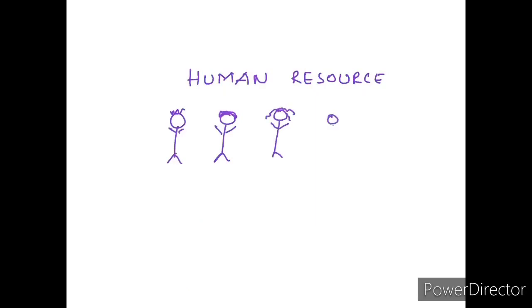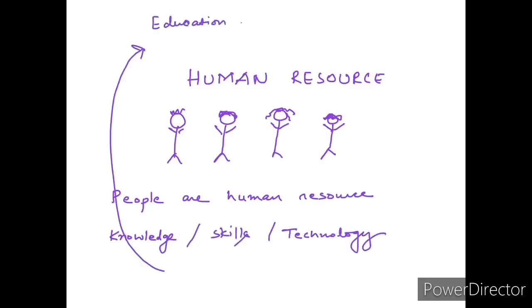Next is human resources. People are human resources because they have knowledge, skills, and they have created technology. Education and health help in making people a valuable resource. That is why human beings are a special resource. Improving the quality of people's skills so that they are able to create more resources is known as human resource development.